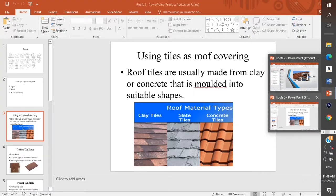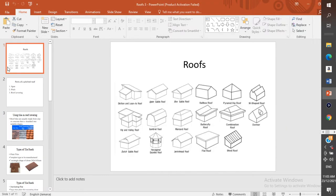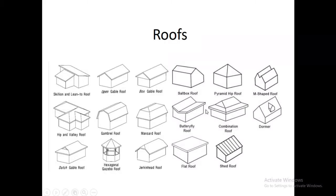We're going to start off by looking at some different types of roofs. If you're looking for a video on how to do a roof plan with the rafters and everything, I already did a video on that — I linked it down below. What we're going to look at is how you go about selecting a type of roof for a building. We have the skillion and the lean-to roof, an open gable which is a very common type of roof, and a box gable — box gable because this part here is closed off.